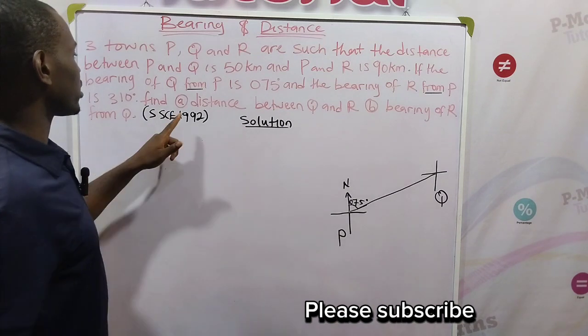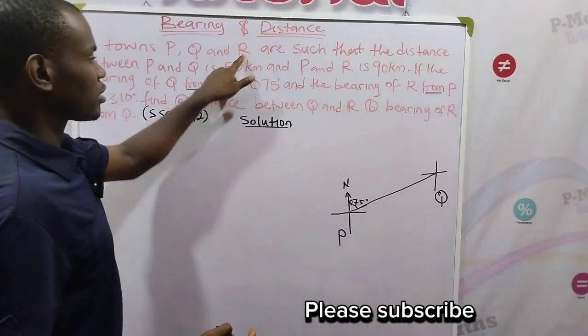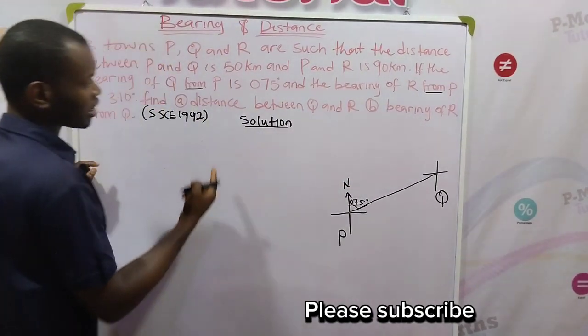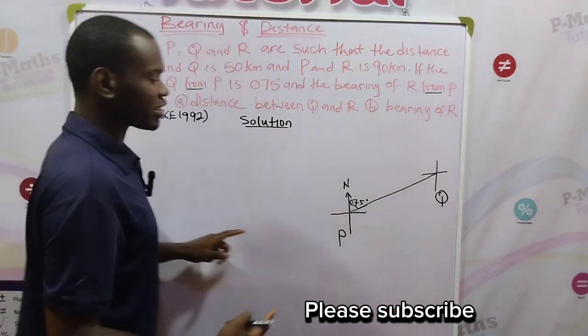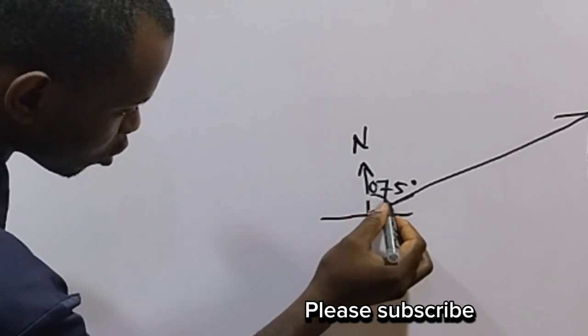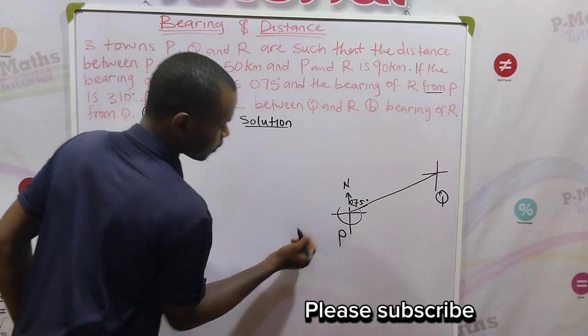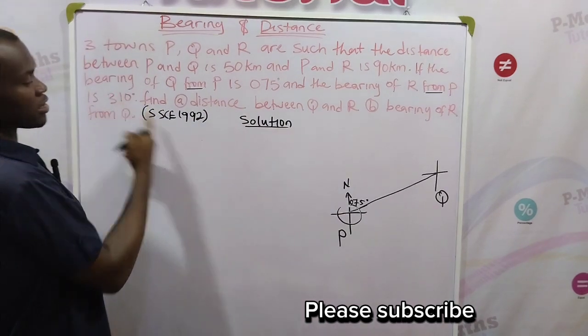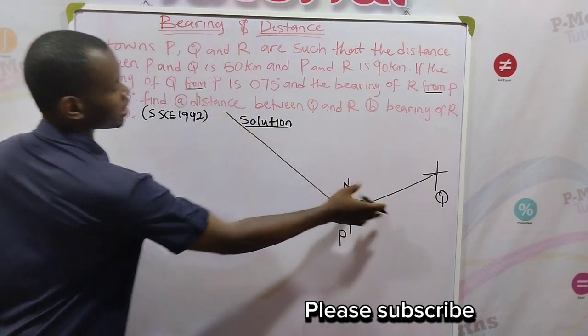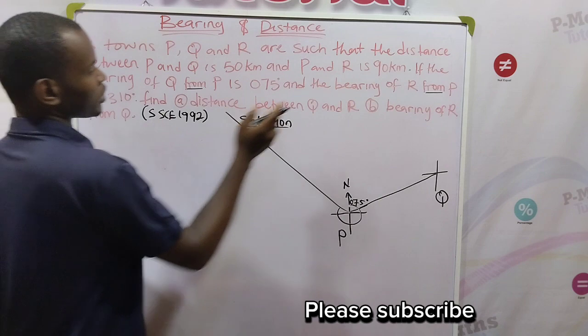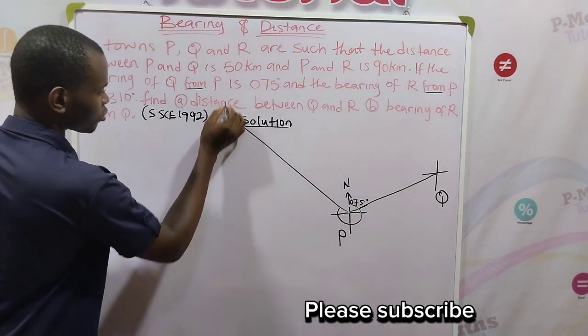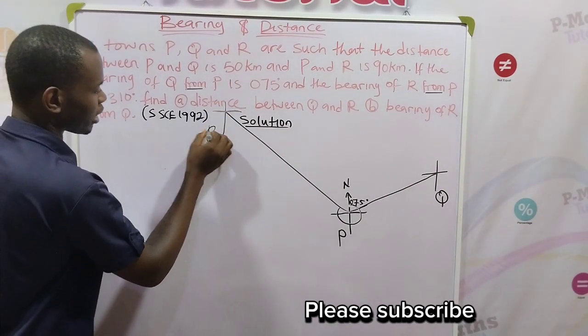Now the next point we want to locate is position R, and we have that R from P is 310. So if I want to locate R, I will turn 310 degrees from the north pole of P from this place. So I will turn like this, get to here. 310 is in the fourth quadrant. So the movement will be somewhere here and has to be longer than this because the distance between P and R is 90 kilometers. So let's locate it here. This is my R.